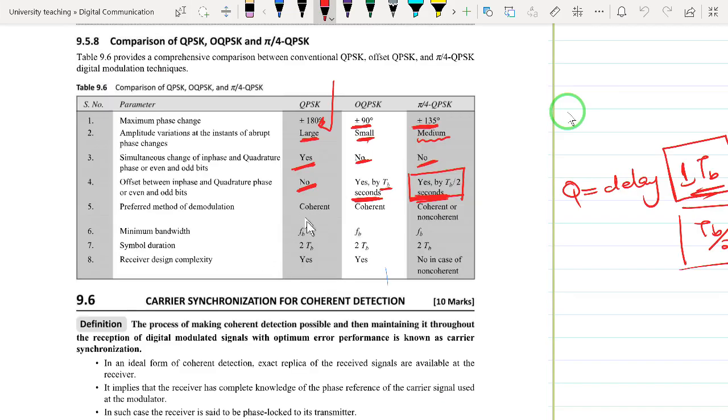We also noticed that the preferred method of demodulation for QPSK is coherent, similar to OQPSK, but π/4 QPSK may use either coherent or non-coherent. The minimum bandwidth and symbol duration are the same for all versions. The complexity of the receiver design is quite high in QPSK, but for the non-coherent case of π/4 QPSK, it's not as complex as the other two.